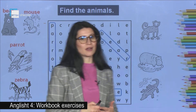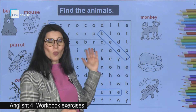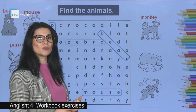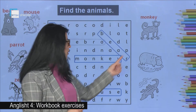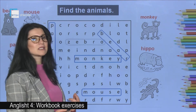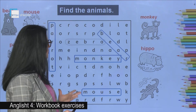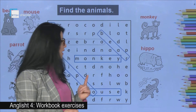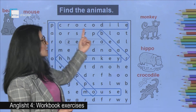Let's have a look at the other animals. What is it? A monkey. Where is the word monkey here? Have a look. It is here. What about this one? What can you see here? It's the hippo. And where is the hippo in this puzzle? It is here — hippo. And the last one is crocodile. The word crocodile, it's at the first line.